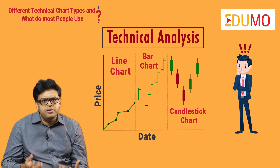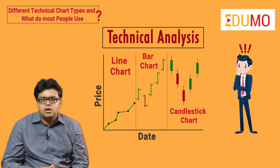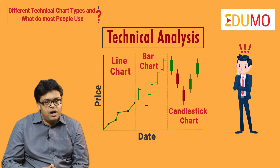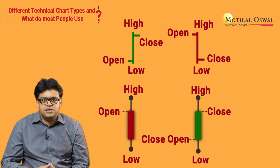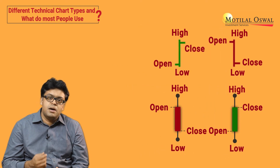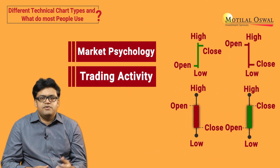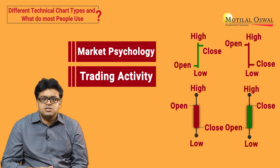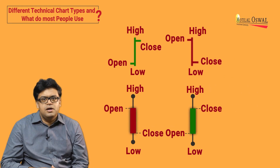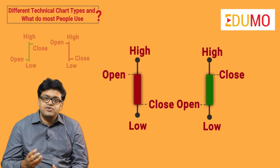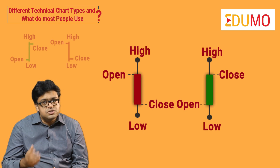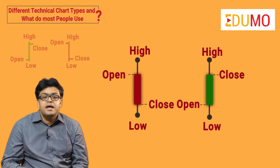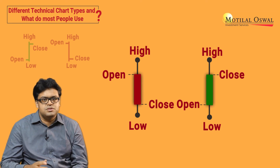Now you may be wondering which chart you should use. Bar and candlestick charts are widely used because the open, high, low, and close data gives a quick overview of the day's market psychology as well as trading activity. Candlestick and bar charts show the same information; however, candlestick charts are easier to read as a trader can immediately see and compare the relationship between the open and close, as well as high and low.